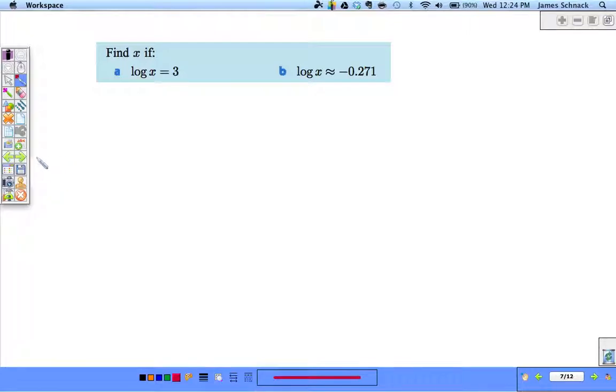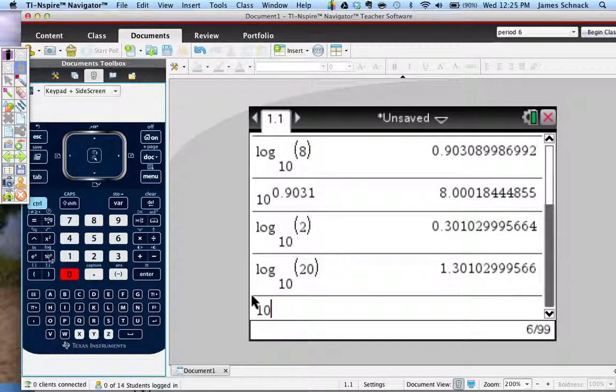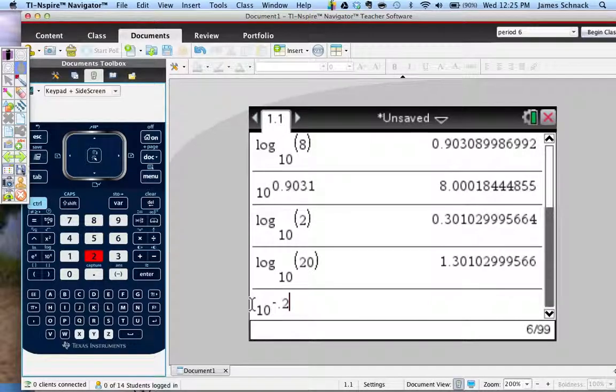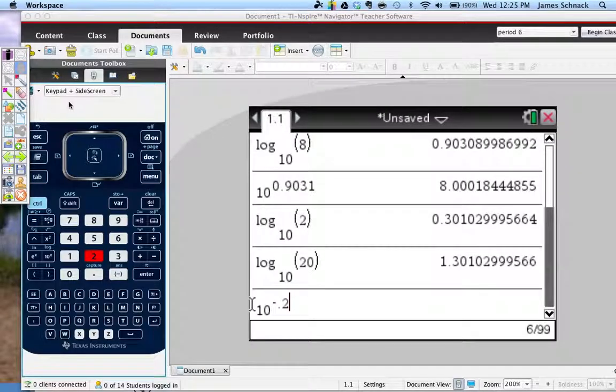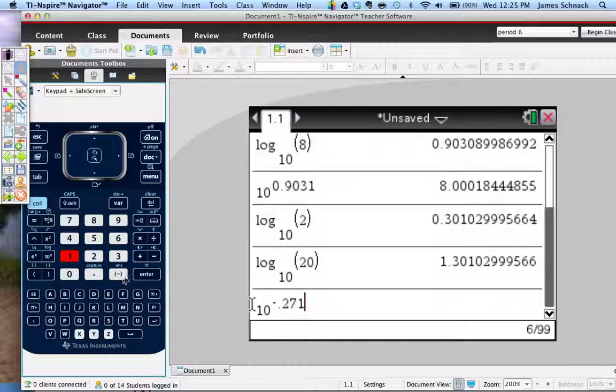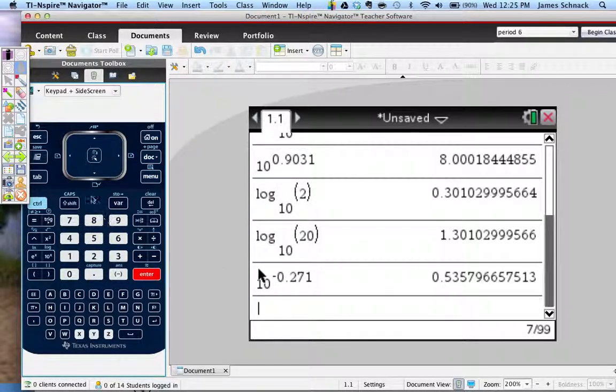Find x if log of x equals 3. This is kind of going backwards. Remember, logs are equal to exponents. Exponents of what? Exponents of the base. 10 to the third equals x. x is equal to 1,000. 10 to the negative .271 is going to be approximately x. To do this, we're going to go to our calculator. 10 to the negative .271. Enter. So this is approximately .536.